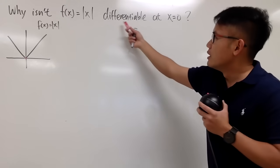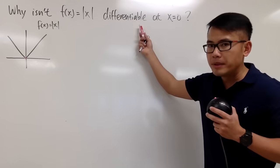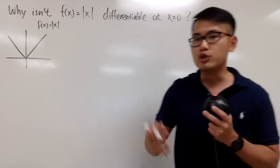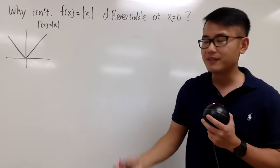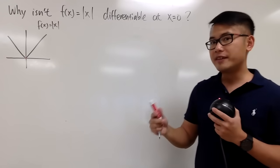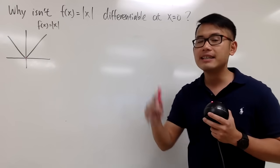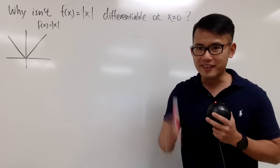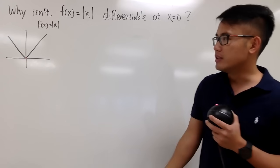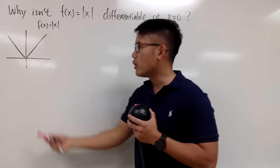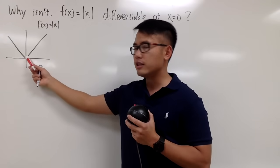Remember, differentiable means that we should be able to find the derivative. And derivative means the slope of the tangent line. And now the question is, can we draw a tangent line at this corner?